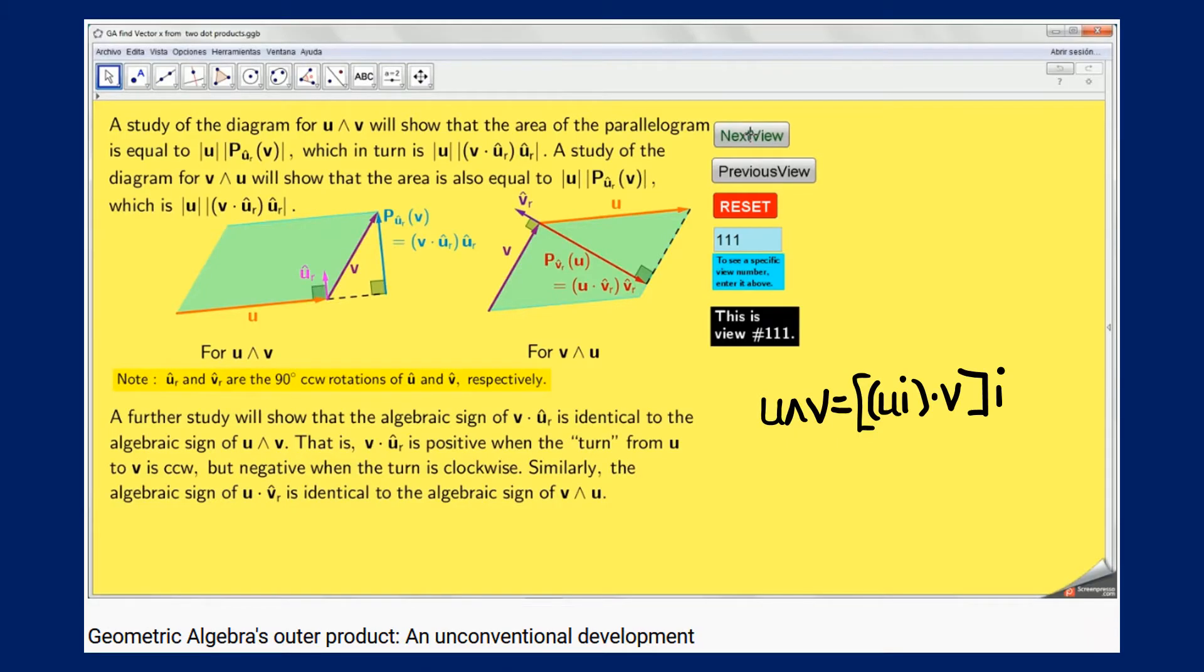It can also be derived - in fact it was derived in a previous video - it can be derived geometrically so that for any two vectors u and v their wedge product would be u i dot v times i. So knowing that, you can prove it geometrically, so why did Peter Joot go ahead and do an algebraic proof of it?